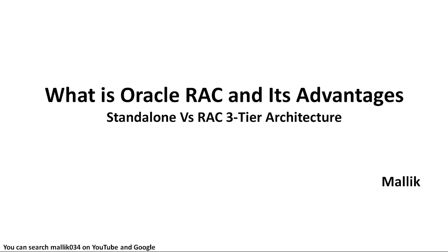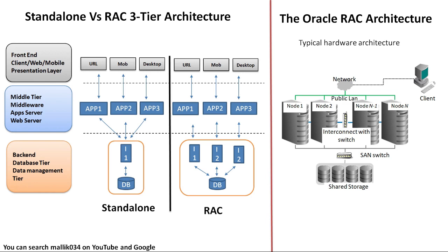Getting started with today's session: Standalone versus RAC in 3-tier architecture. First, understand what is 3-tier architecture. 3-tier architecture is kind of three layers in a complete architecture design — the top layer, the middle layer, and the bottom or back-end layer.